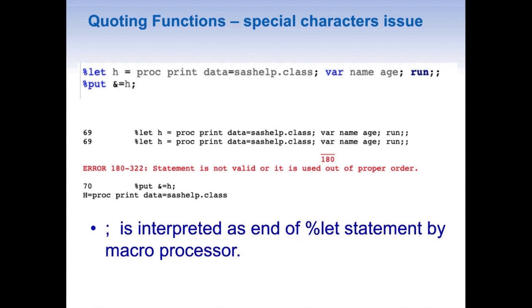But when I run the %let statement I get an error. The error says that 'var' is excess — meaning the %let statement should have ended earlier, at 'proc print data=sashelp.class'. The semicolon inside the text is interpreted as the end of the %let statement by the macro processor. But I want it treated as text — as part of my macro variable. The %put shows only 'proc print data=sashelp.class', not the full intended value.